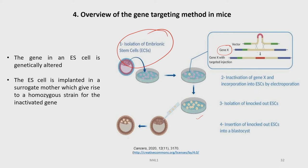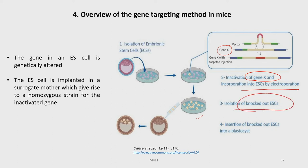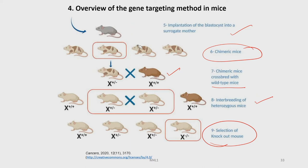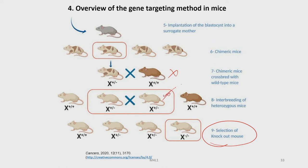Starting from isolating embryonic stem cells, then inactivating a gene of interest through knockout, introducing it by electroporation, isolating the knocked-out embryonic stem cell and inserting into the blastocyte, implanting it in a surrogate mother leading to chimeric mice, then crossing with wild-type and in-breeding of heterozygous strains. Finally, at the ninth step, selection of knockout mice is done, producing a mice population in which gene X is not available or functional — these are the knockout mice with respect to gene X.